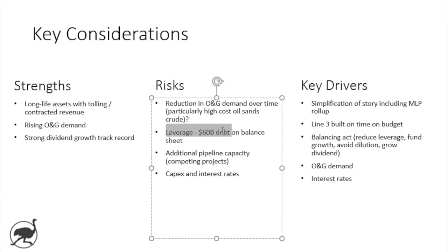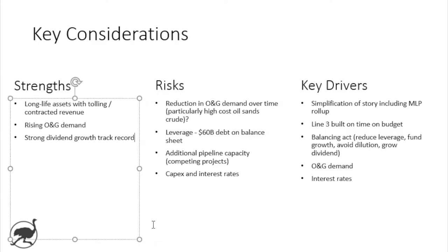Leverage is another risk — $60 billion-plus in debt on the balance sheet, and that has investors concerned, particularly given the growth pipeline of projects they have on the go. It's not just that they've got $60 billion of debt after the Spectra acquisition and are now going to gush free cash flow. They're trying to bring leverage in line while funding the biggest growth pipeline of projects in the company's history, all while growing the dividend. It's a tricky balance for Enbridge.